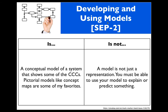The idea of a model in NGSS might be a little different than you might expect. Usually when we talk about models in NGSS, we're talking about a conceptual model of a system. It might illustrate some of the cross-cutting concepts — maybe a pictorial model showing how cause and effect relationships happen, or tracing the flow of energy or matter in a food web. Now a model is not a representation; those are two different things. A model must be able to be used to either explain or predict something — it's not just about representing what an object looks like.